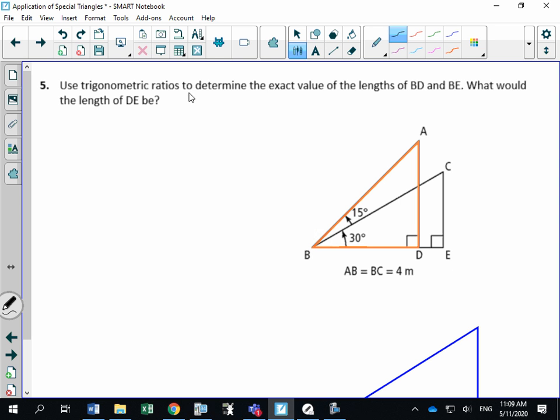What it says is use trigonometric ratios to determine the exact value. So again, exact means there's going to be special triangles. The exact value of the lengths of BD and BE, and then it asks what would this line segment here be. So a lot of things are going to be happening.